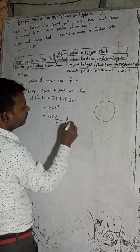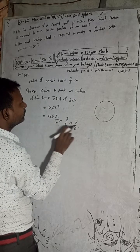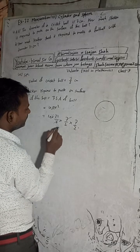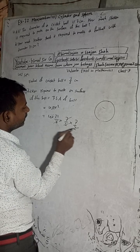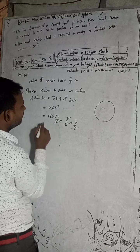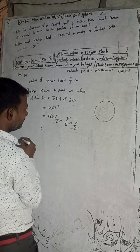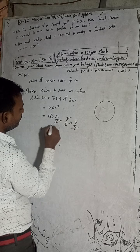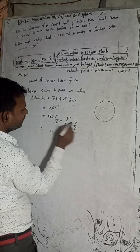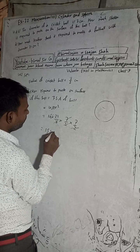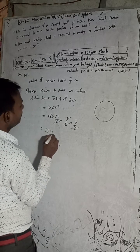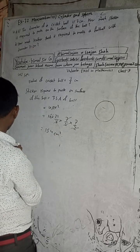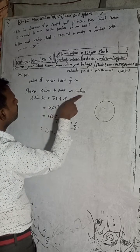So r² means 7/2 × 7/2. The 7s cancel with the 7 in 22/7, and the 4 cancels as well. We get 7 × 2 = 14, and 154 cm². So sticker required equals total surface area of the ball equals 154 cm².